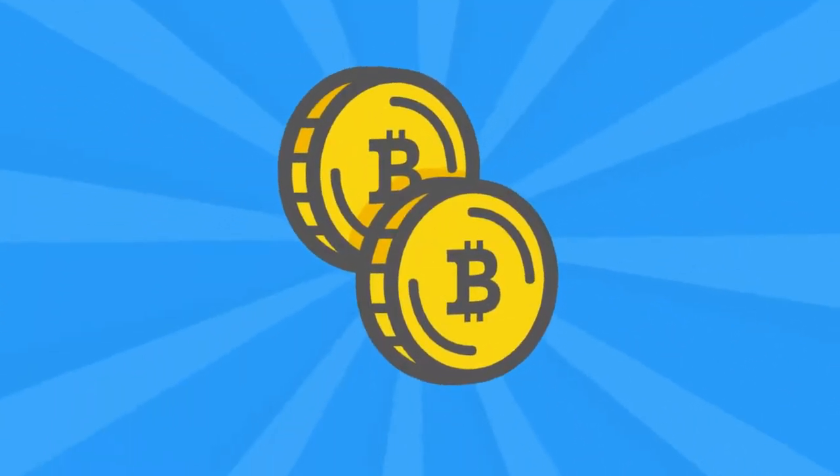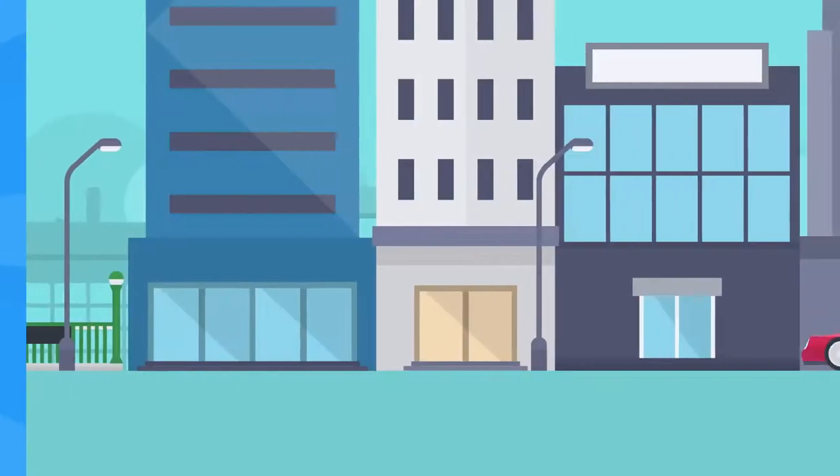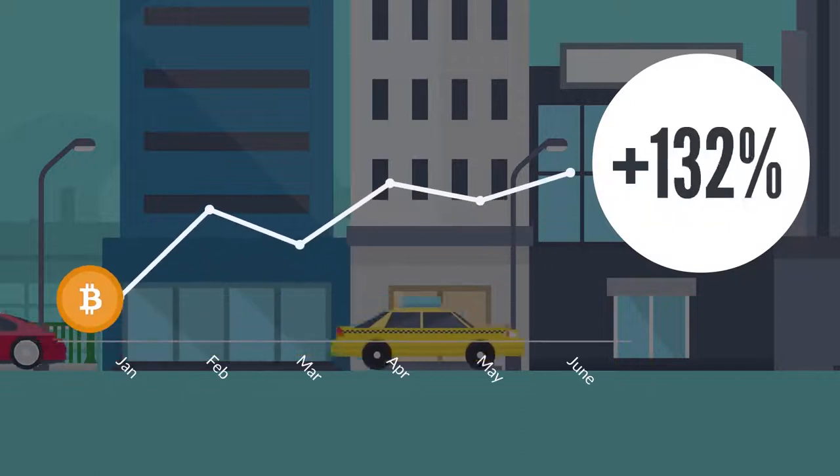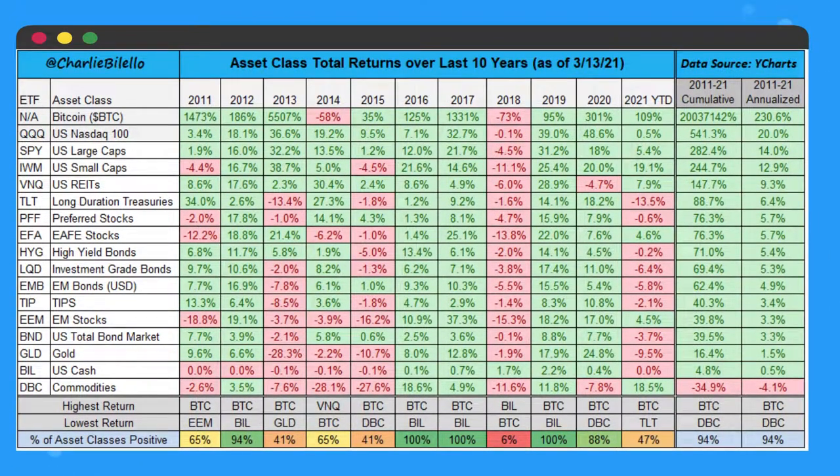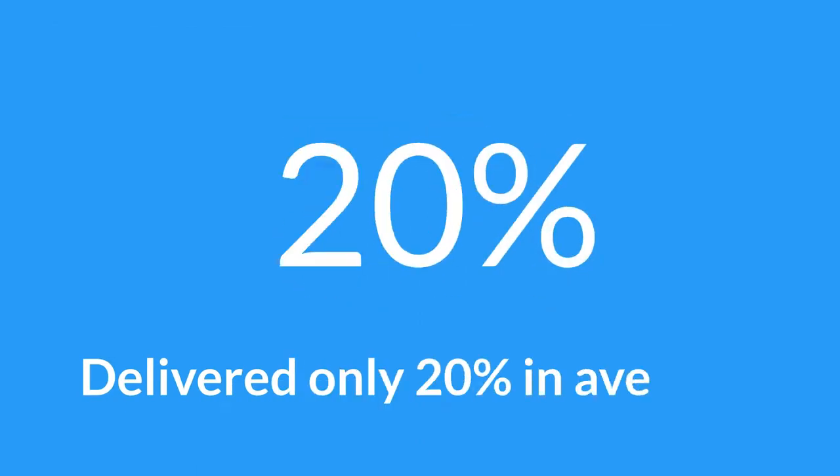Bitcoin has been the best performing asset of all time, with an average year-on-year growth of 200%. The second best asset, US Nasdaq 100, has delivered only 20% on average.